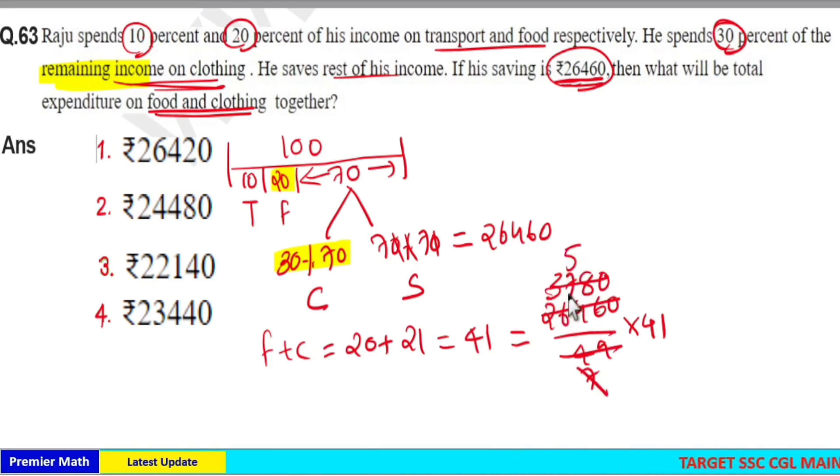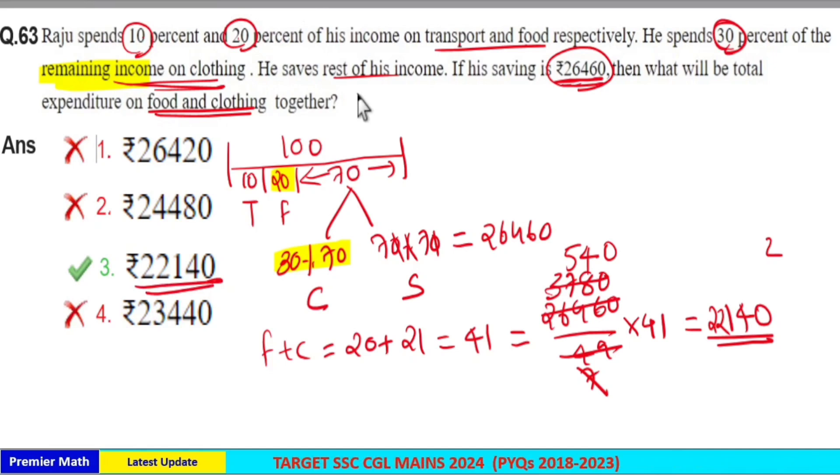So 540 into 41. 0 here. 4 into 1 is 4. 5 plus 1 is 6, so 16, 5 plus 1 is 6. Remaining 2. 5 into 4 is 20 plus 2 is 22. So 22,140, option 3 is your answer. So expenditure on food and clothing is ₹22,140.